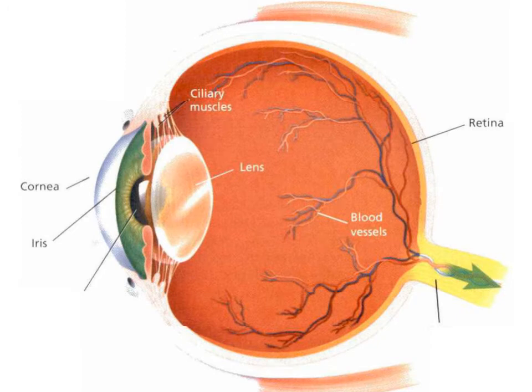Let's see the structure of the human eye. Here we have the cross-section of the human eye, and let's see how light enters the eye, how the image forms, and how the image is transferred to the brain.